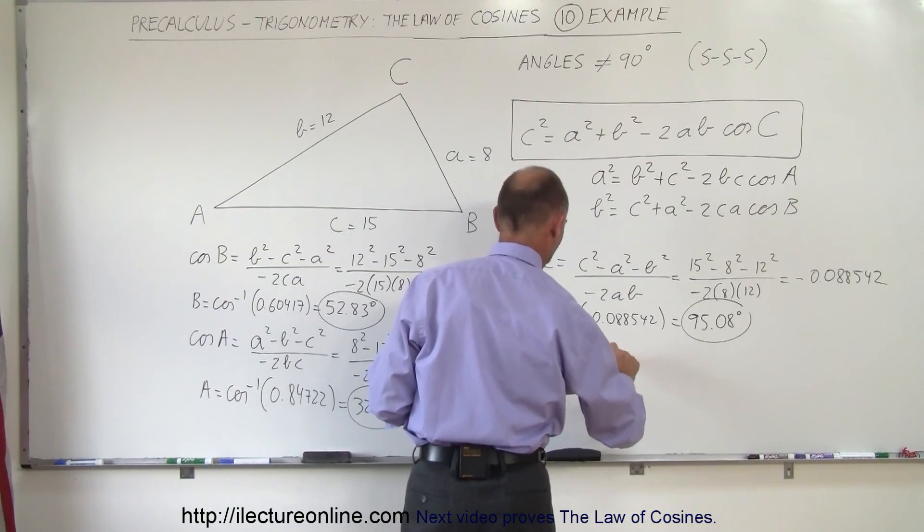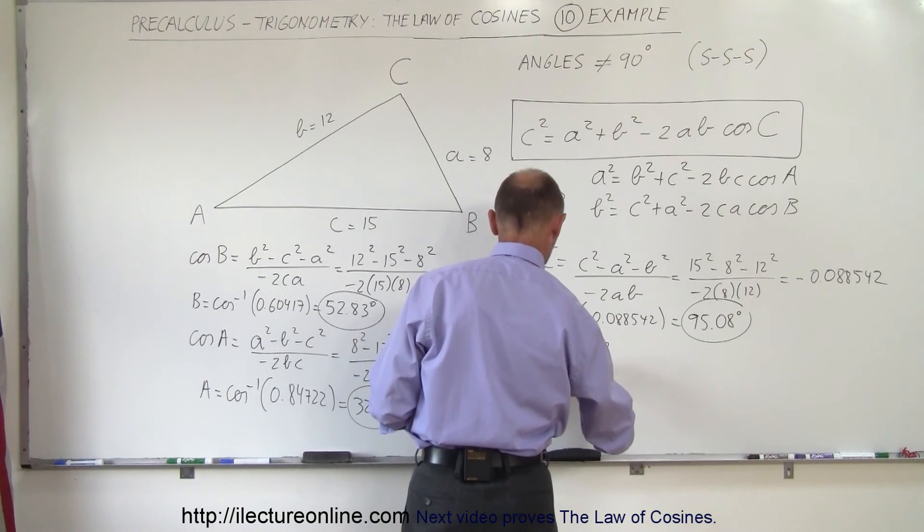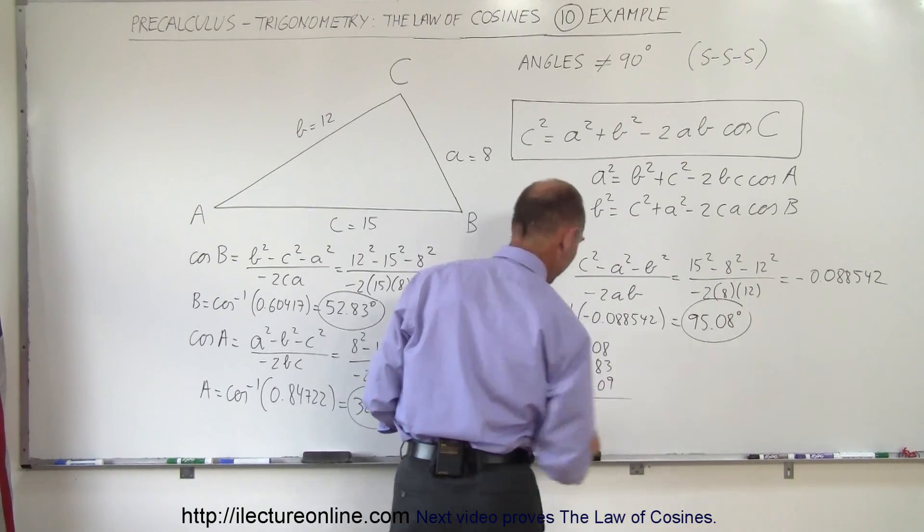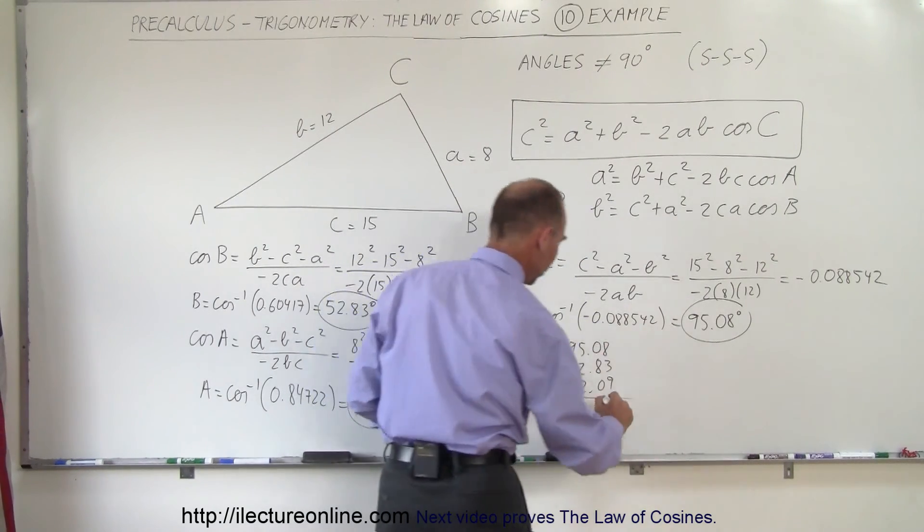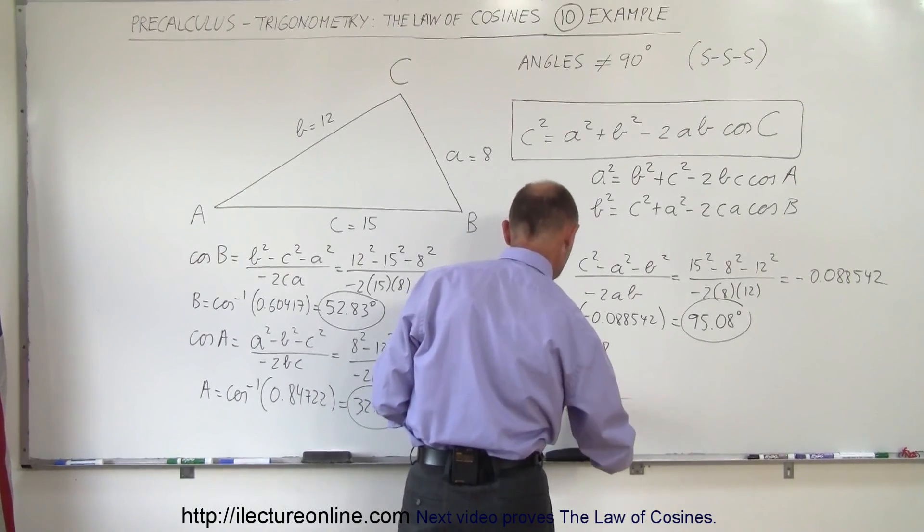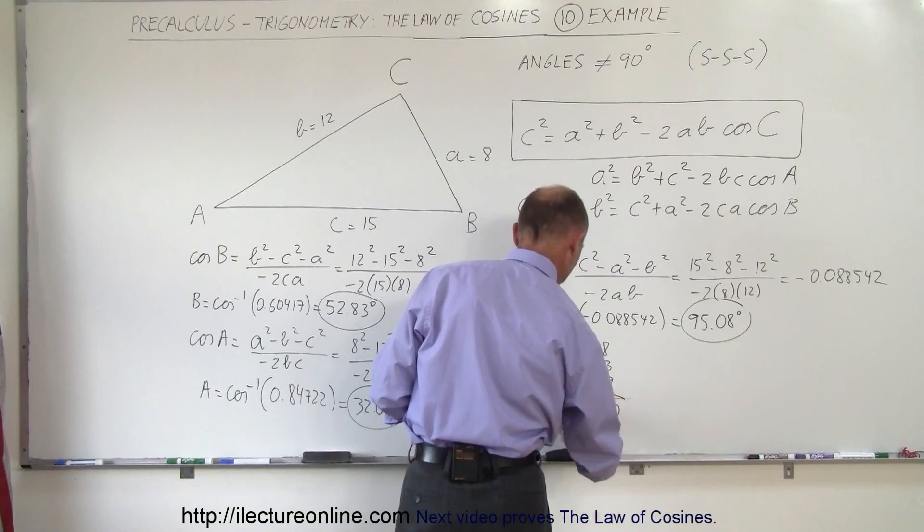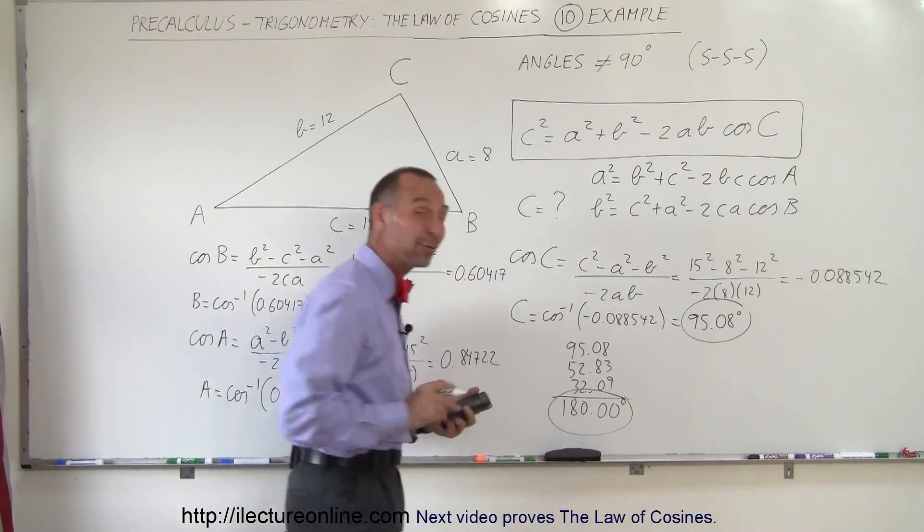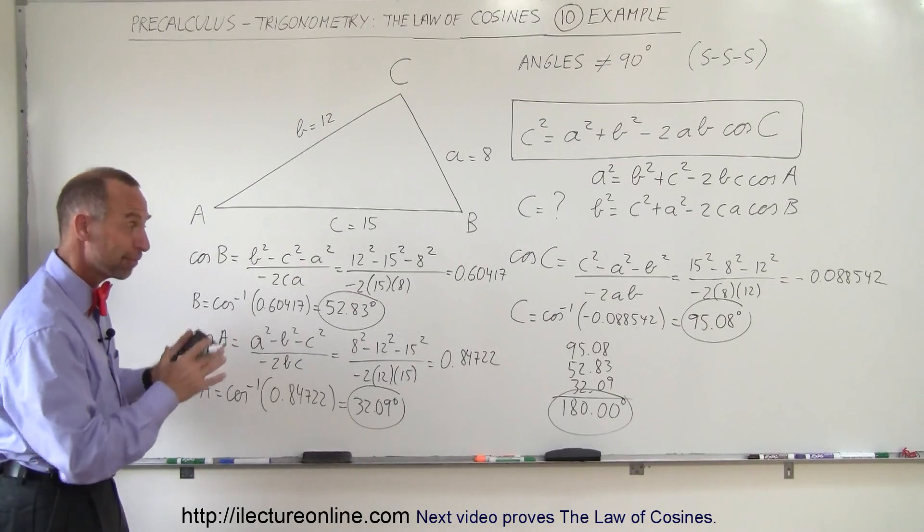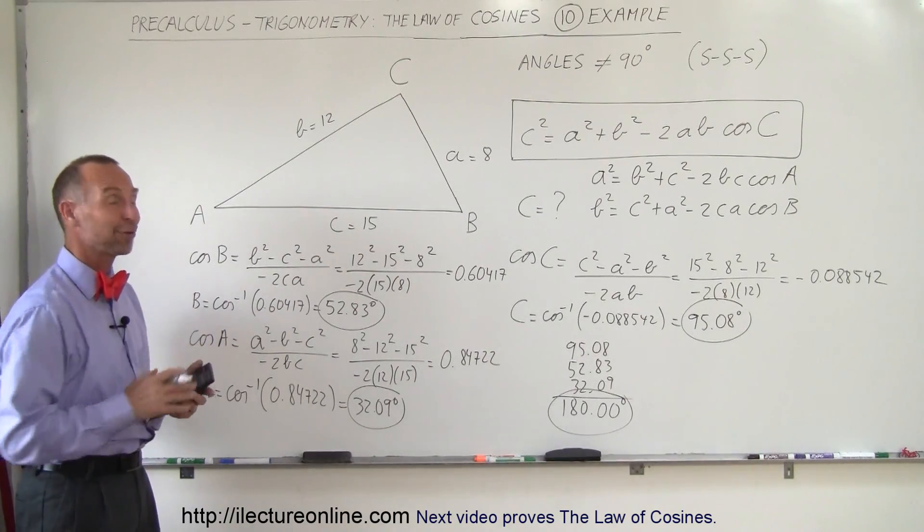95.08, 52.83, and 32.09. That's 11 plus 9 is 20, 0, 2, 0, 1... 180 degrees exactly, which tells us we did everything correctly and the law of cosines works.